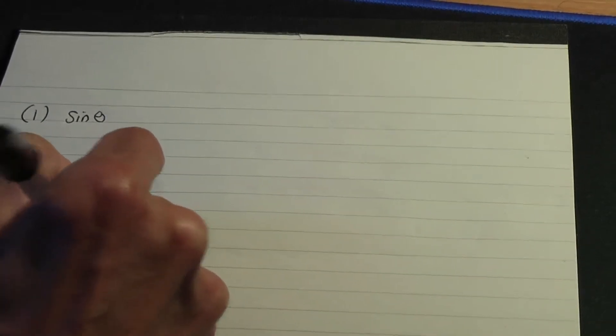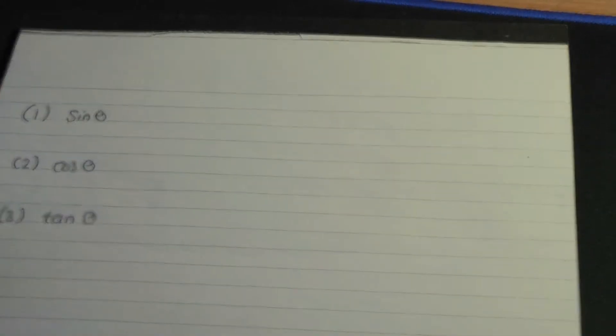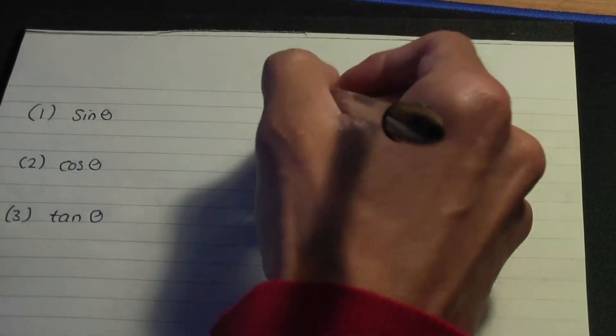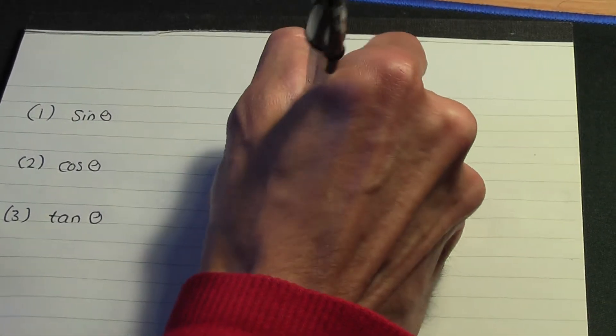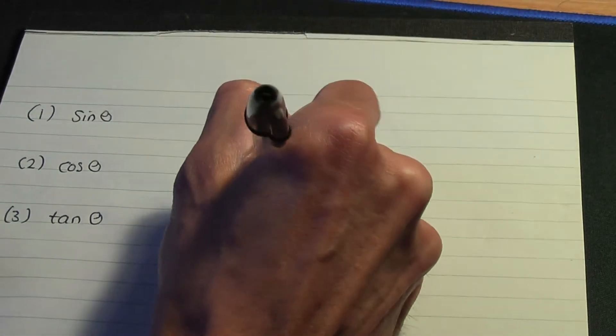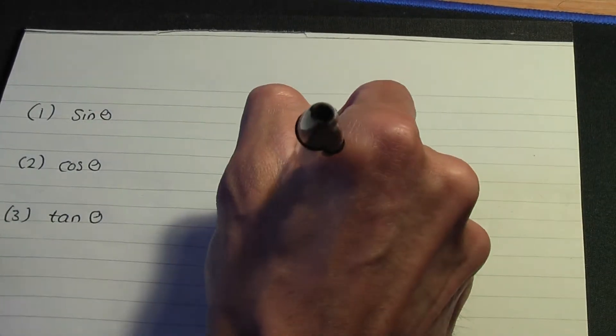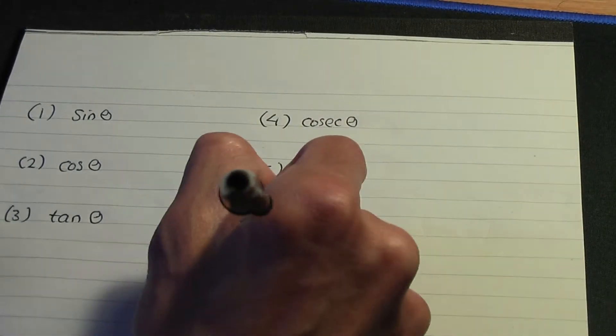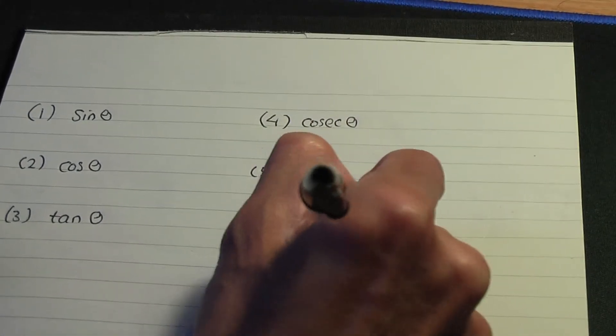I'm pretty sure that at a GCSE level you would have seen the first three. So, the first three are sine theta, the second one is cosine or cos theta, and the third one is tan theta. However, there's another three ratios, so let me write them alongside this. Number four is cosec theta, number five is sec theta, and number six is cot theta.